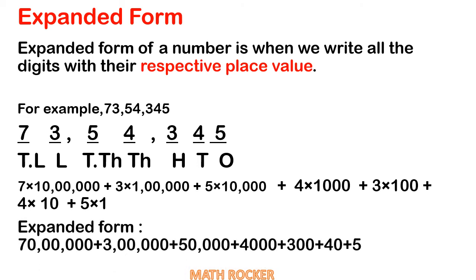So: 7 into ten lakhs = 70 lakhs; 3 into 1 lakh = 3 lakhs; 5 into ten thousand = 50,000; 4 into thousand = 4,000; 3 into hundred = 300; 4 into ten = 40; 5 into 1 = 5. This is the expanded form.